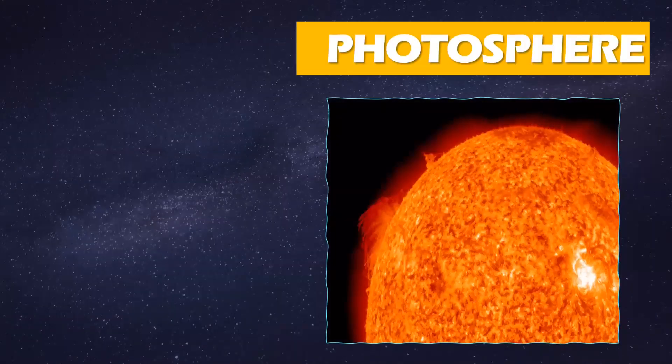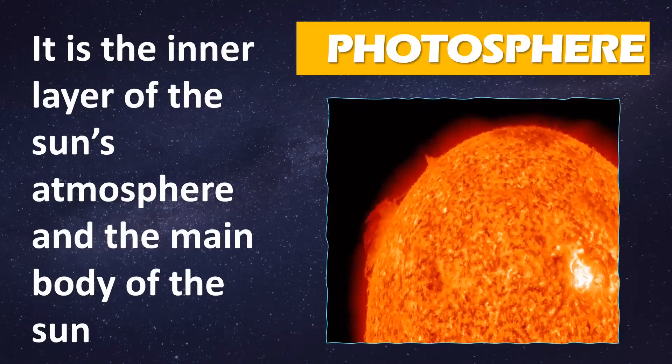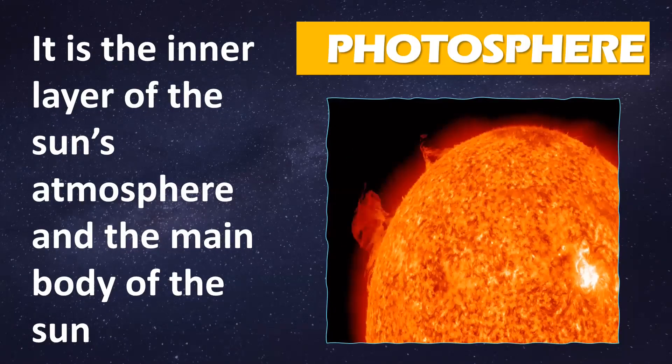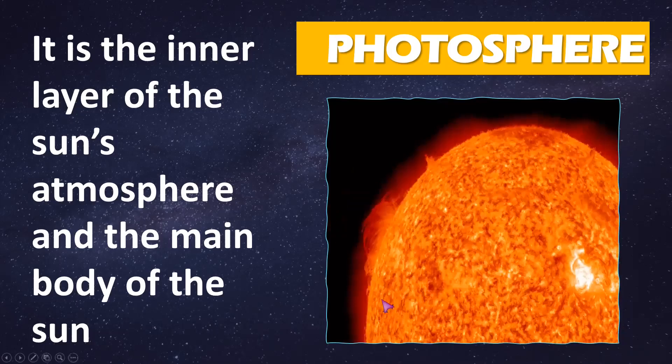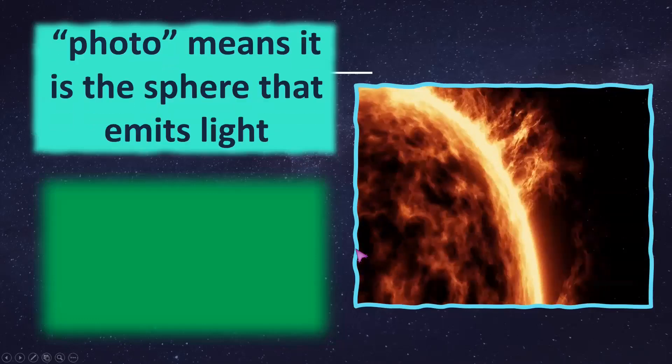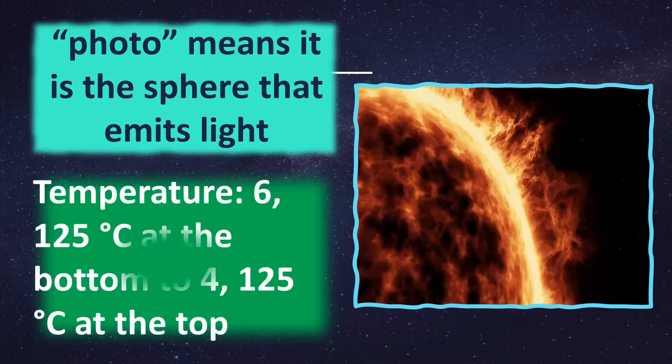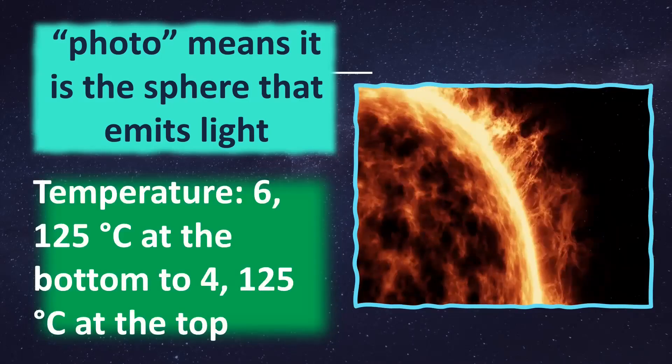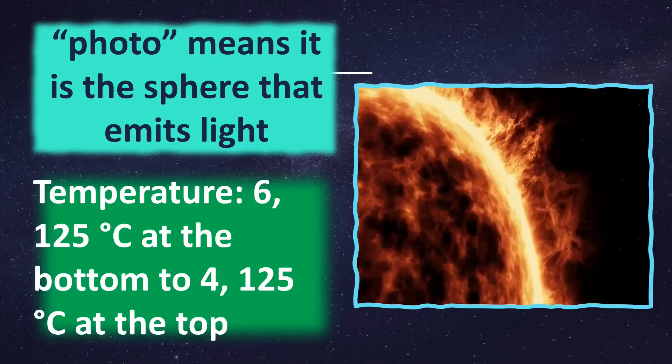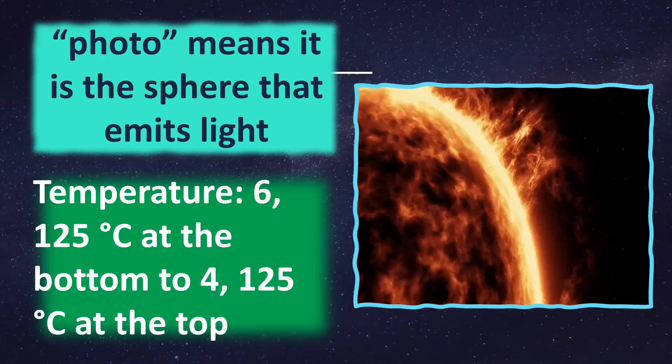Let's begin with the layers. One is called the photosphere. It is the inner layer of the sun's atmosphere and the main body of the sun. Photo means it is the sphere that emits light. The temperature of the photosphere is about 6,125 degrees Celsius at the bottom and 4,125 degrees Celsius at the top.